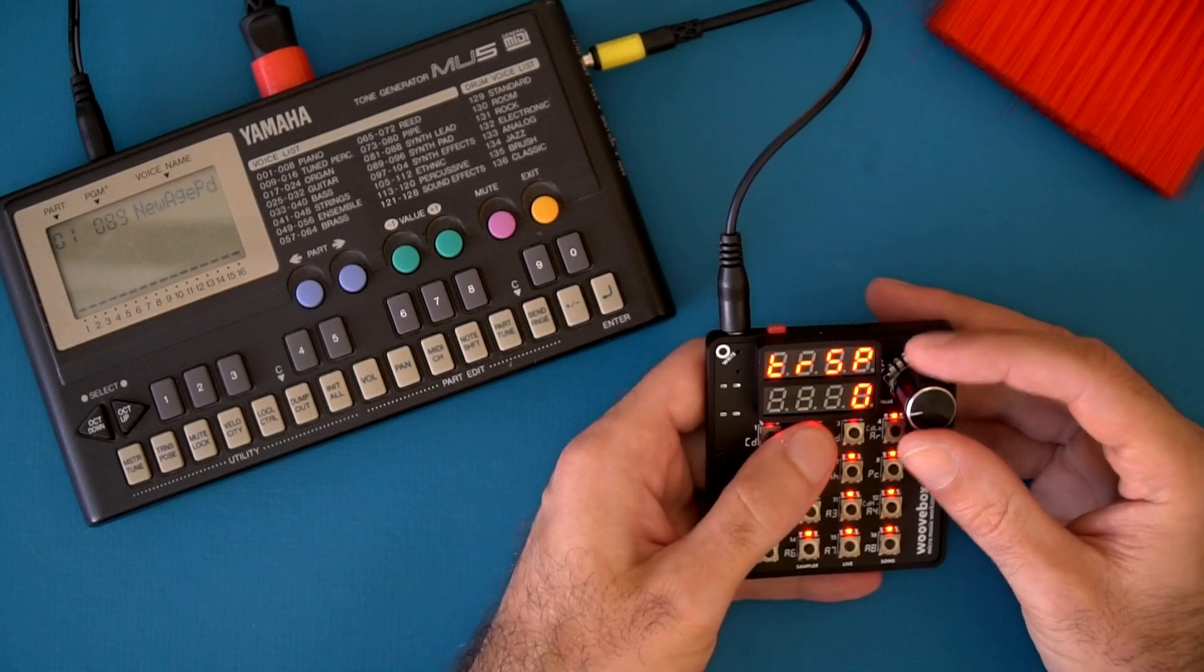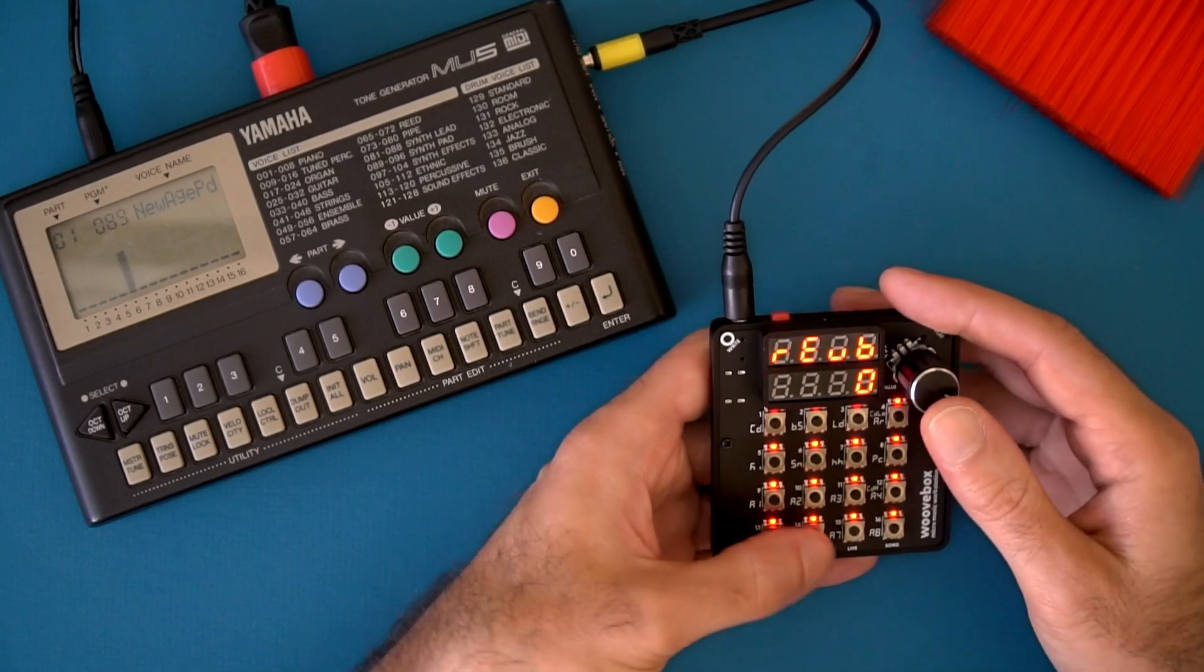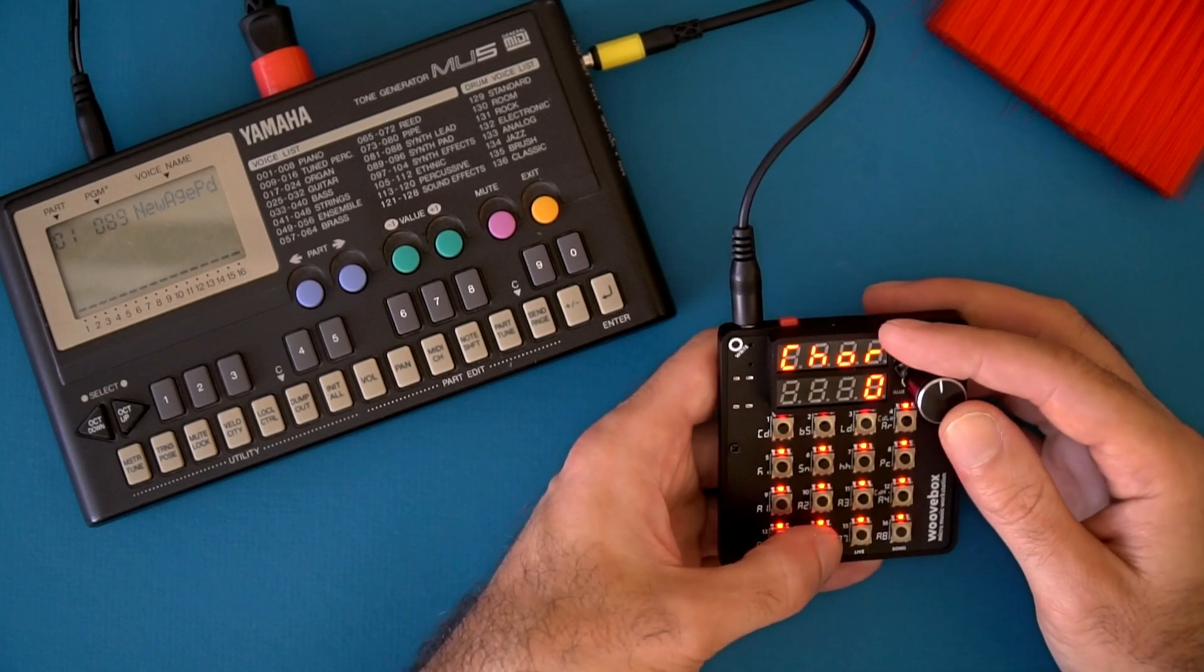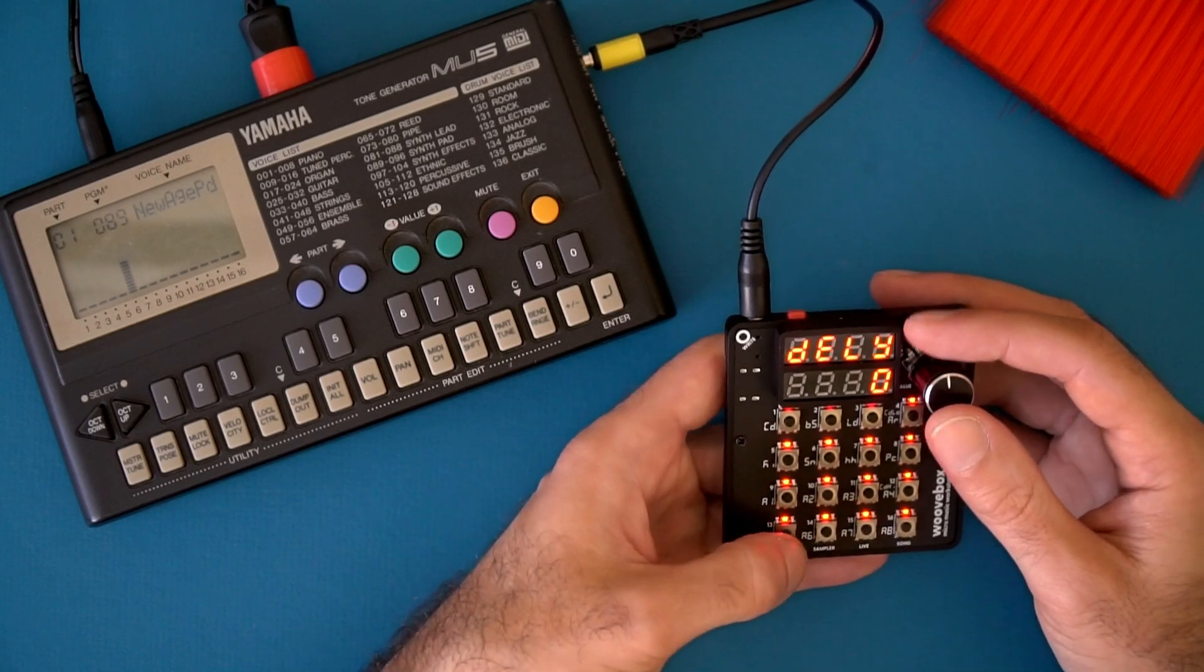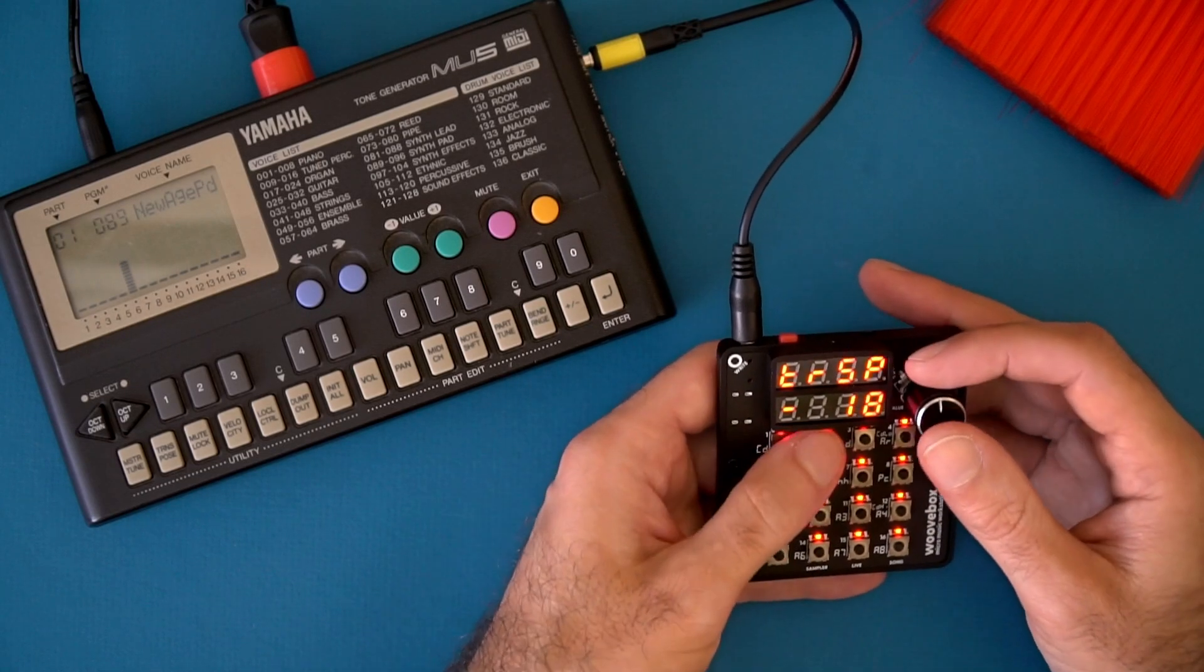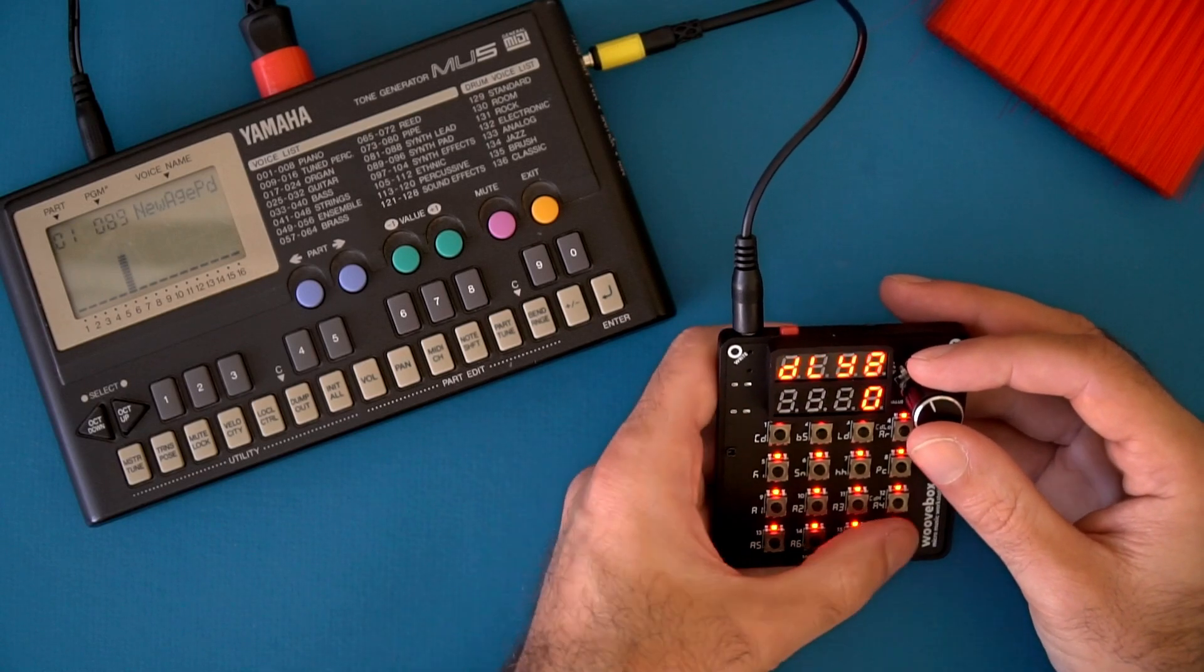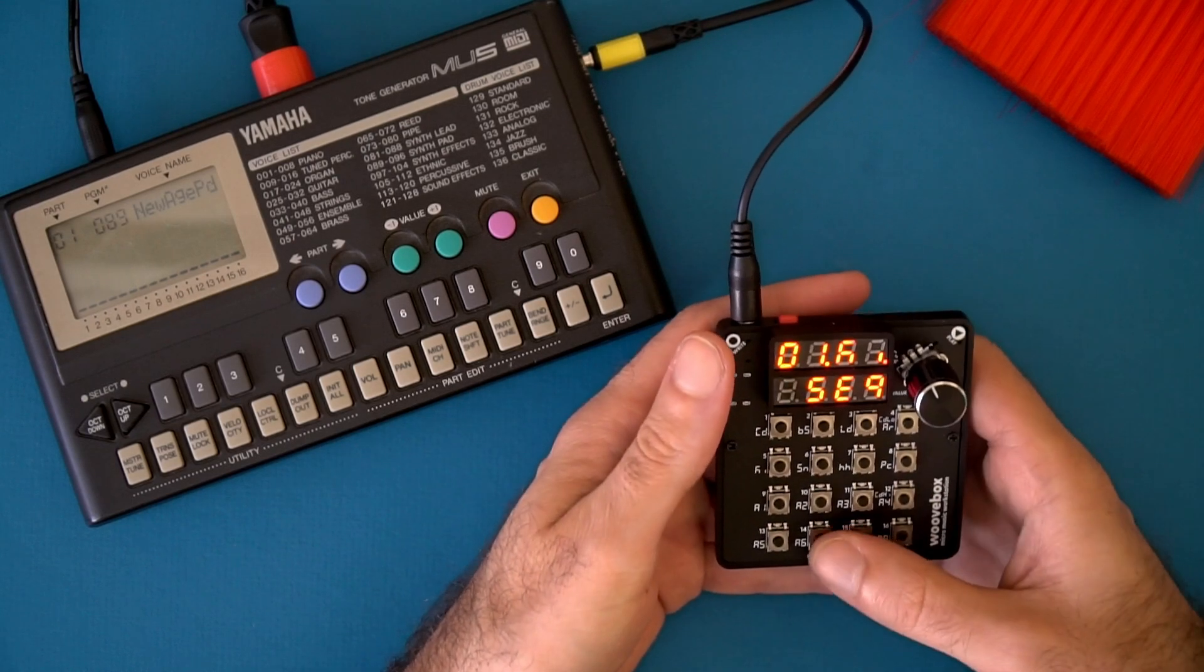There you go. This is drum kit and then the kits are lower. So I'm going to transpose down. Lower. That's a kick right there but let's go lower. Oh my gosh. That's so 80s. Let's do it.